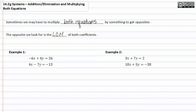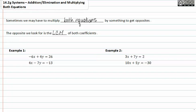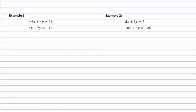In example one, we see that neither of the terms would add to zero, but if we multiply the first equation by two and the second equation by three, our x terms would add to zero.